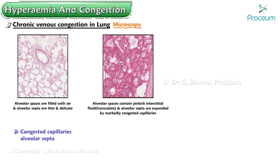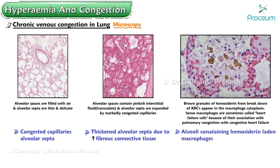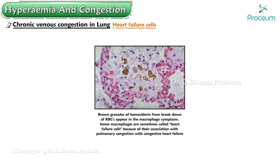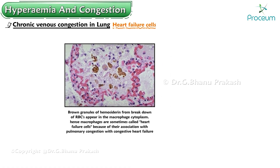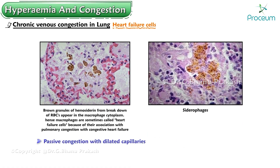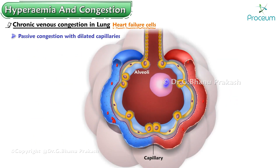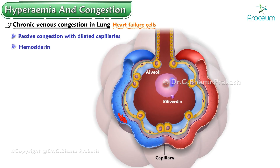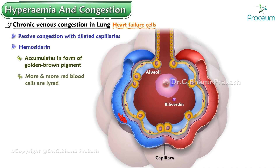Microscopically, the alveolar walls show dilated and congested capillaries and are markedly thickened due to increased fibrous connective tissue. The alveolar spaces contain numerous hemosiderin-laden macrophages, also referred to as heart failure cells. Due to passive congestion with dilated capillaries, red blood cells leak into the alveolar spaces, are broken down, and the released hemoglobin is phagocytosed by alveolar macrophages and degraded to release hemosiderin and biliverdin, accumulating as golden-brown pigment.